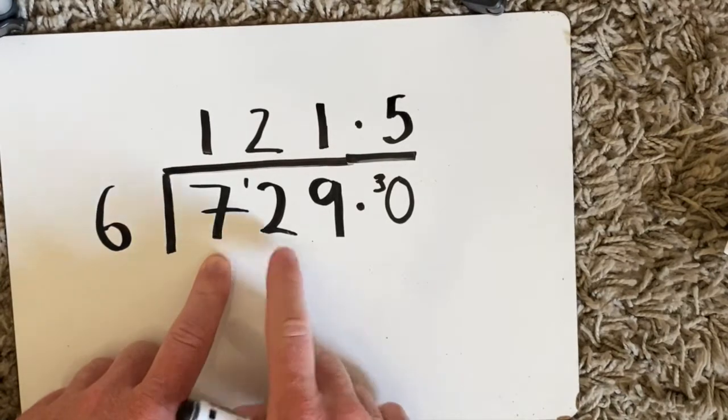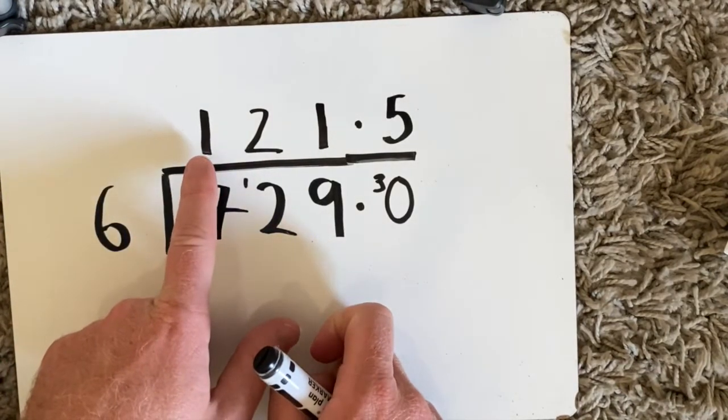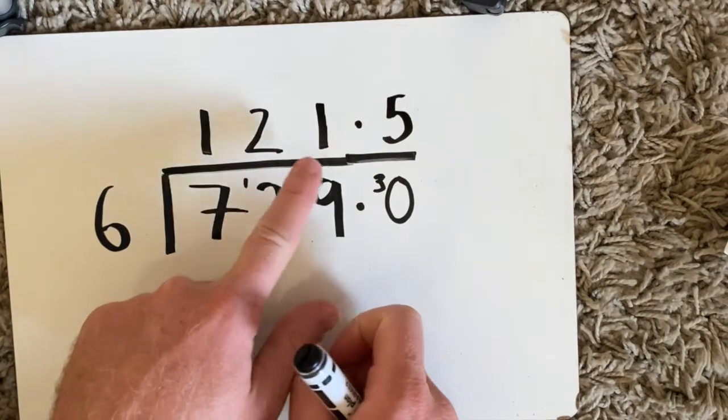So 729 divided by 6 is the same as 121.5.